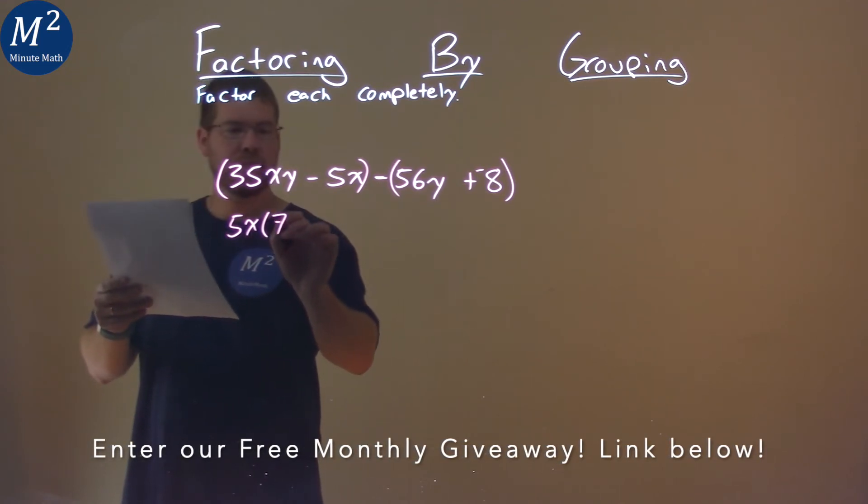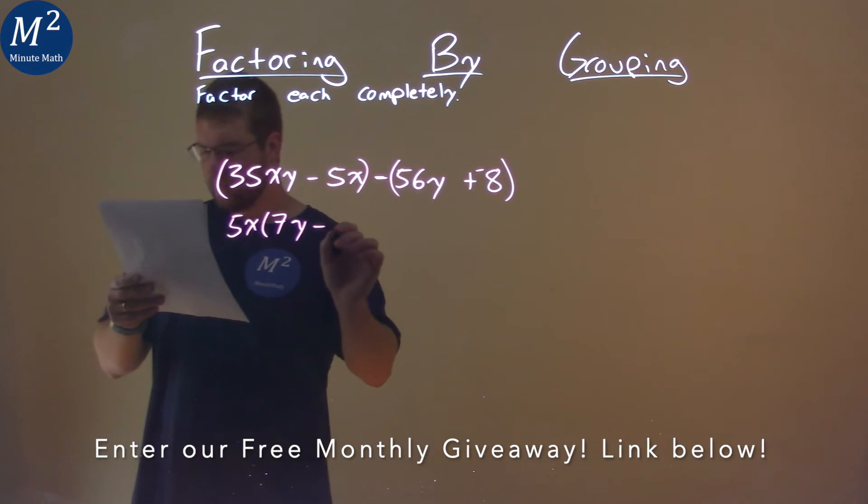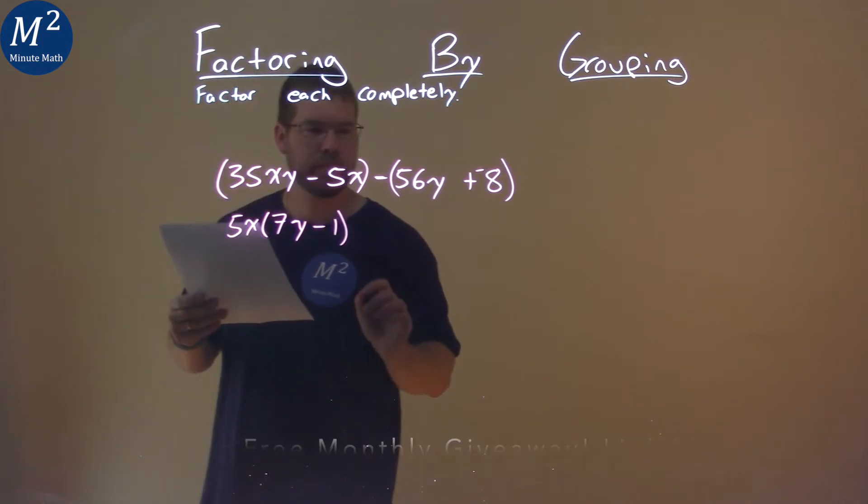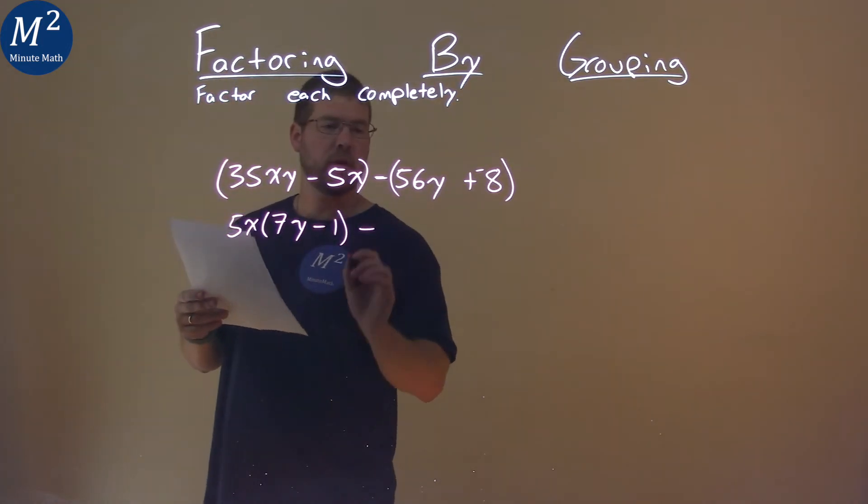5 divided by 35 is 7, and we have 7y here, minus just 1.